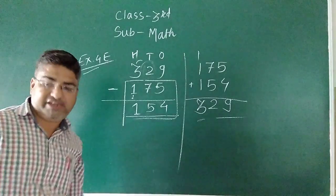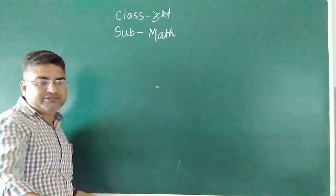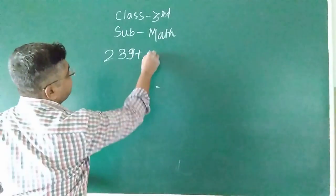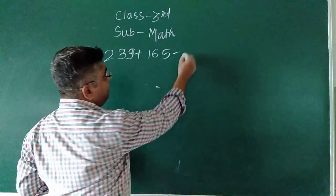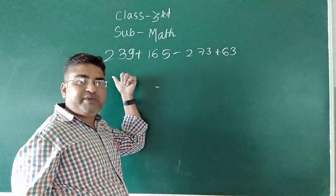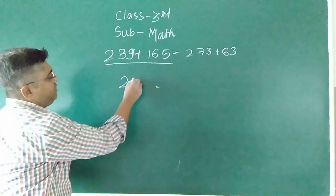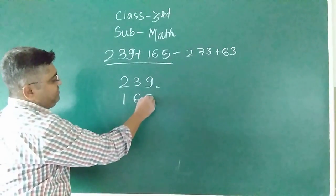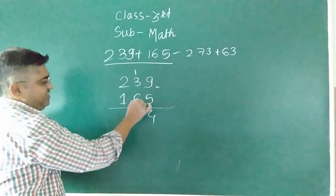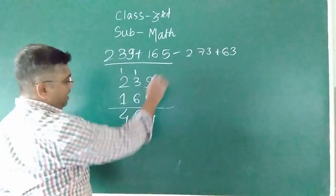Addition and subtraction together. Suppose here is one number: 239 plus 165 minus 273 plus 63. This is the question we have to solve. 9 plus 5 is 14, write 4 carry 1. 1 plus 3 is 4, plus 6 is 10, write 0 carry 1. 2 plus 3 is 5, this is our answer: 404.